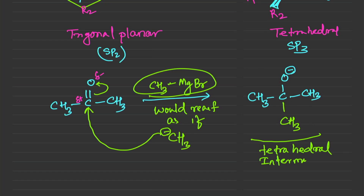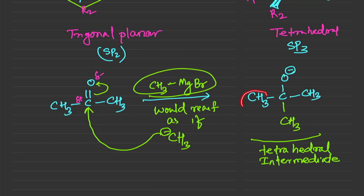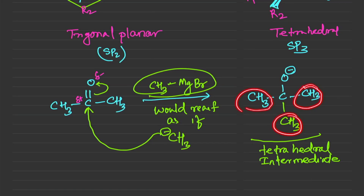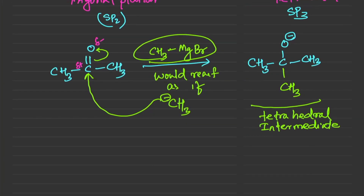The tetrahedral intermediate with the O⁻ ion is unstable and wants to go back to the sp2 hybridized state by removing one of the groups. However, in this case none of the groups can be removed — both CH3 groups are strong bases, meaning they are very bad leaving groups, so we cannot kick out any group here.